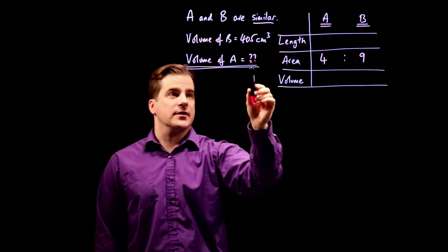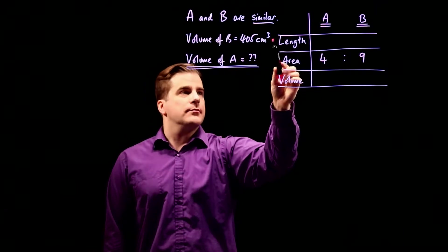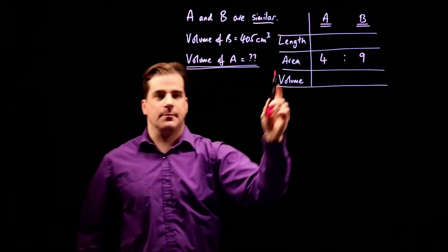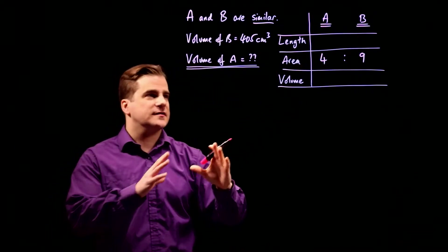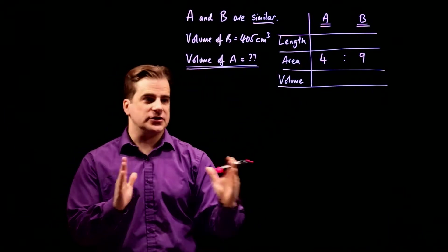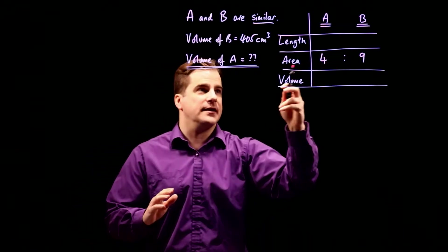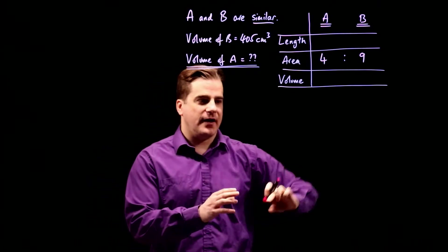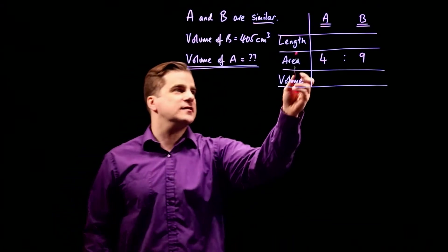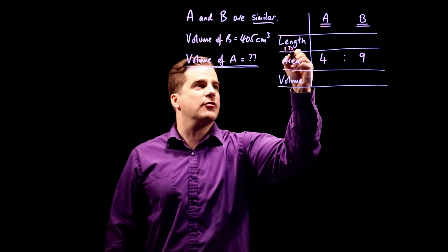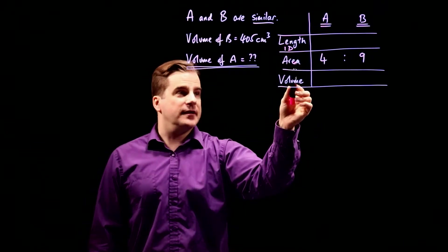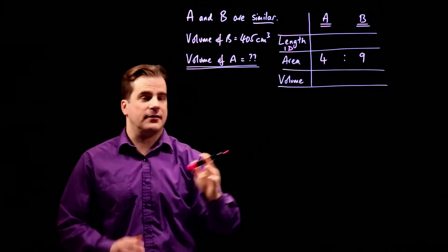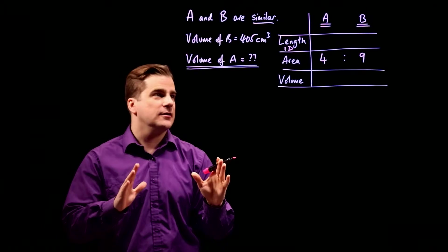We have to find the volume of A. But we're going to work out the length ratios first. And by length, what I mean is just some one dimensional property of A and B, it could be the length of one of the sides, it could be like the height or the depth, it doesn't matter. It's just some one dimensional property.